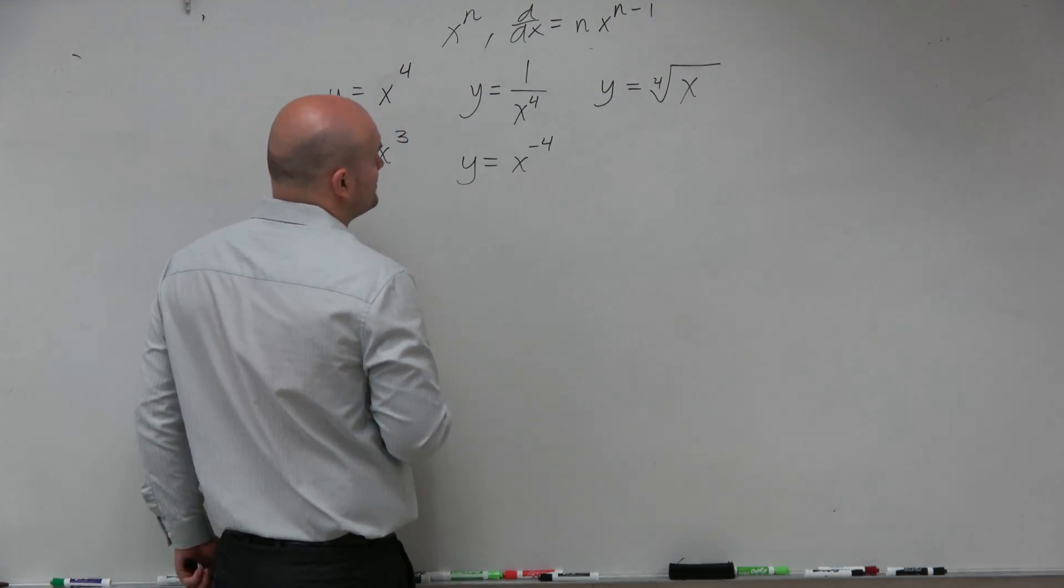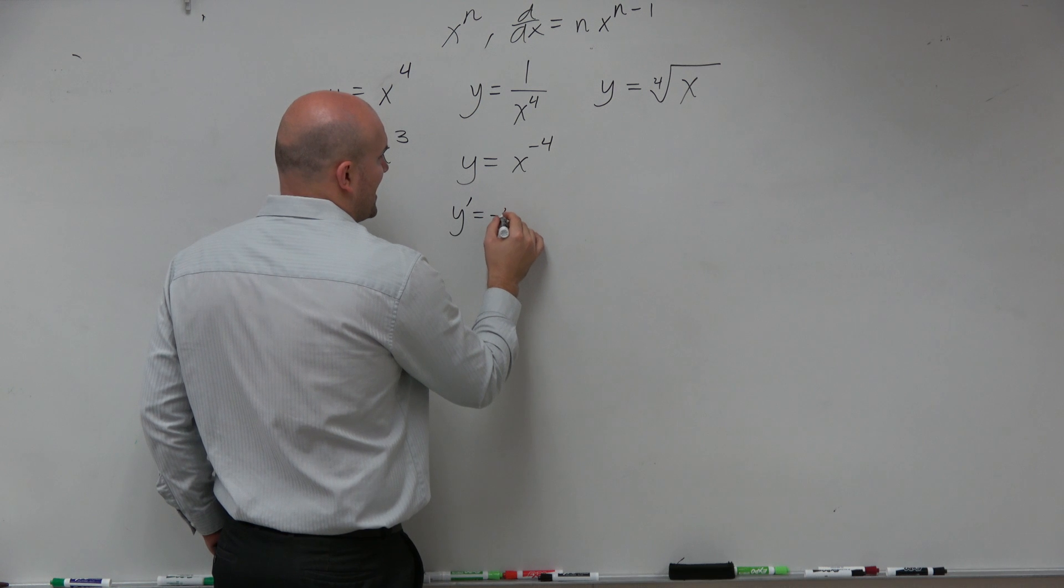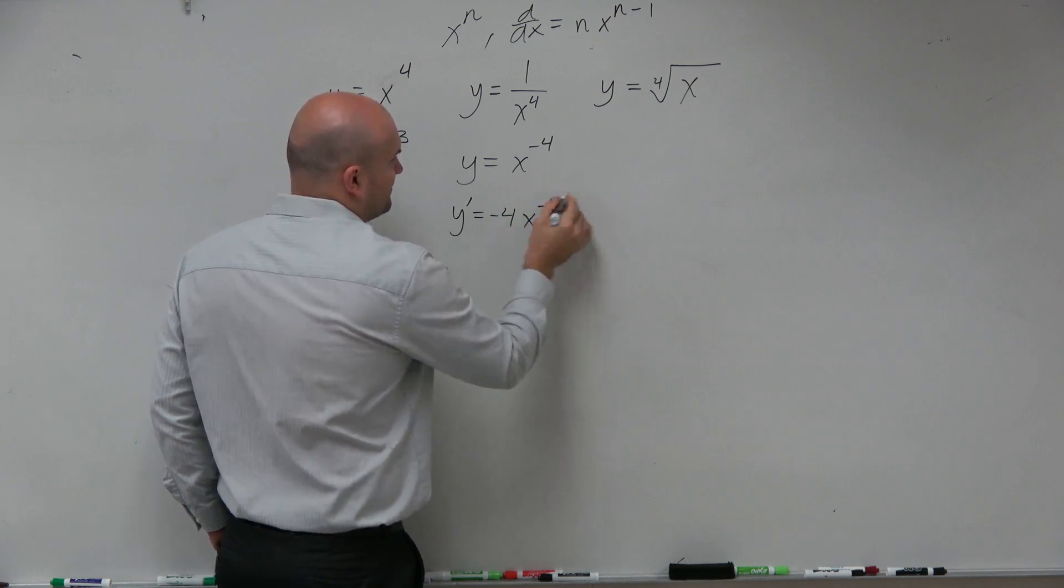That's y prime. So now, y prime equals negative 4x to the negative 5th.